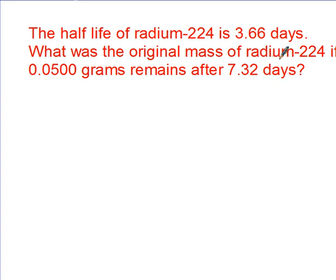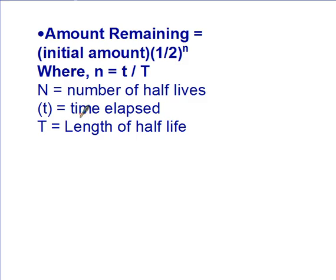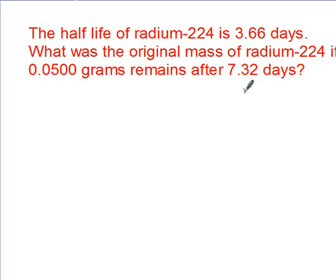What was the original mass of radium if 0.05 grams remains after 7.32 days? 7.32 is our time elapsed, our little t. So that will give us n.